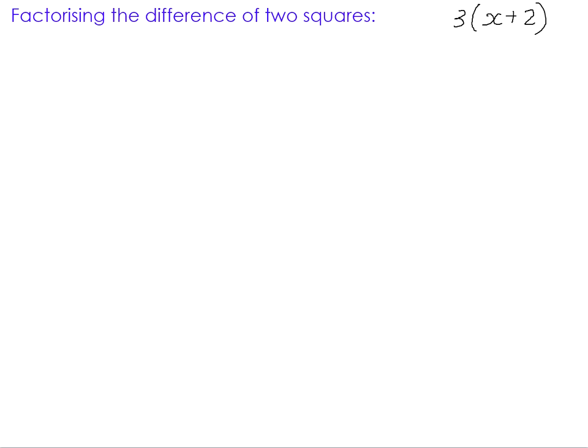But we also learned how to multiply two binomials together. One of the special cases we looked at was when we multiply what we call sum and difference binomials together. For example, x plus 3 multiplied by x minus 3. We call this a sum and difference product because the brackets are the same — they have the same numbers in them — but one is adding and the other one is subtracting. One is a sum and the other is a difference.